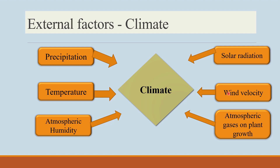Coming to atmospheric gases on plant growth — the atmosphere contains carbon dioxide at 0.03%, oxygen at 20.95%, nitrogen at 78.09%, argon at 0.93%, and others at 0.02%. Carbon dioxide is very important for photosynthesis, and diffusion from leaves through stomata involves CO₂ uptake. Oxygen is important for respiration, and nitrogen is important for plant nutrient content. Certain gases like CO, CH₄, and HF released into the atmosphere are toxic to plants.